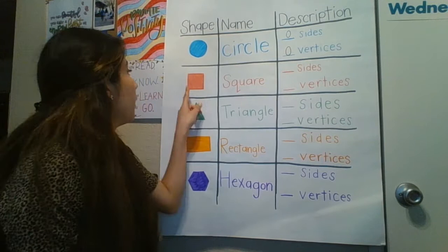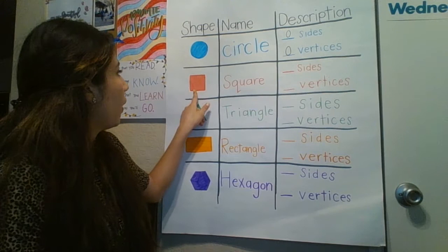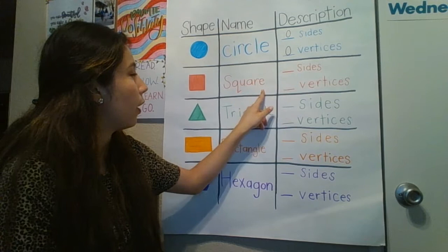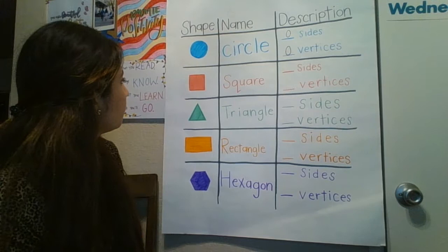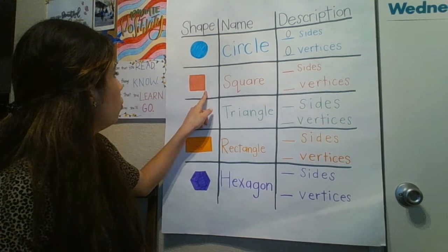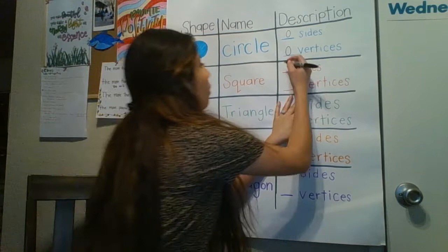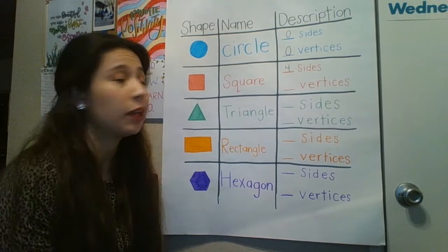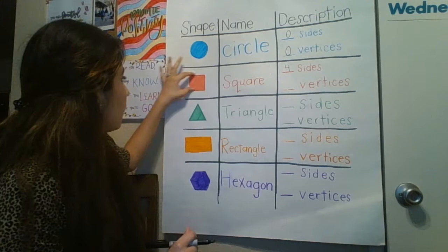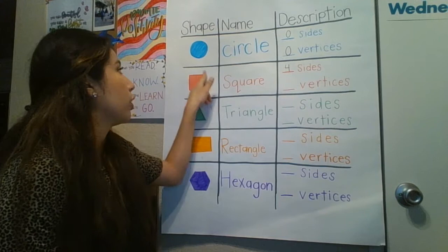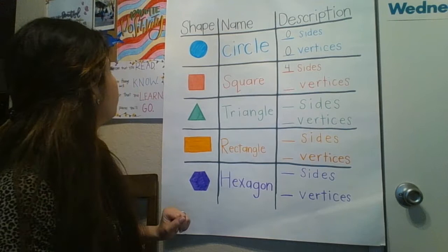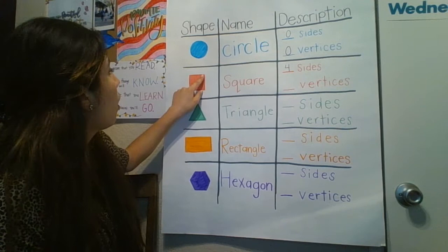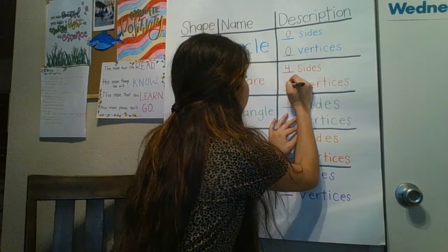The next one is a square — a red square. How many sides do we see? I see one, two, three, four — four sides. The sides in a square are very interesting because all sides are equal; they're the same length. These two sides aren't longer than these two sides. That's what makes it a square. Now let's look at the vertices, which are the corners: one, two, three, four. Four vertices. Good job. That's our square.